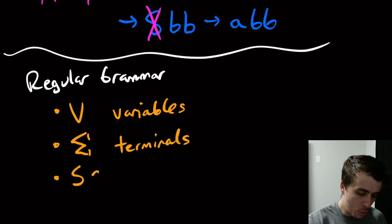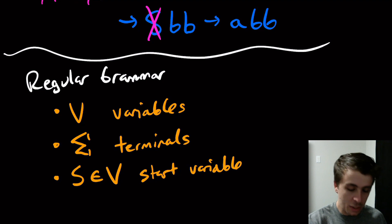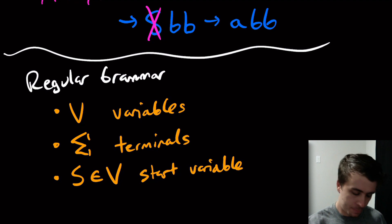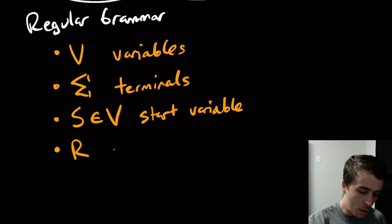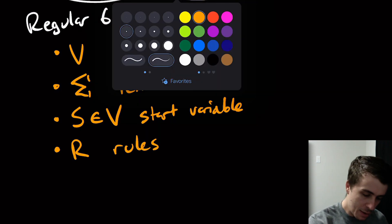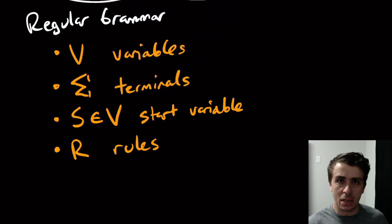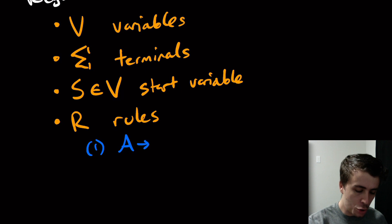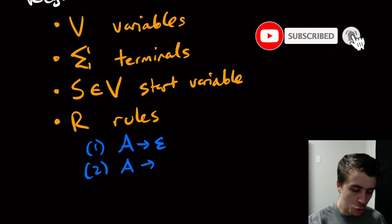We have a start variable S — just like before, it's where you start and you begin applying rules. Then we have R, the set of rules, but we're going to have a very specific set. There are going to be only four types of rules allowed: a variable can go to the empty string, or a variable can go to a single terminal character a.